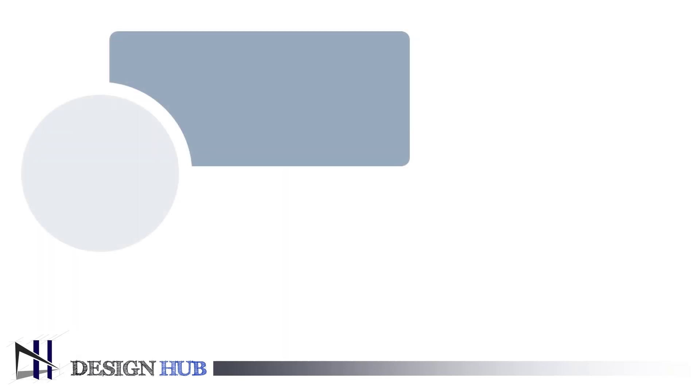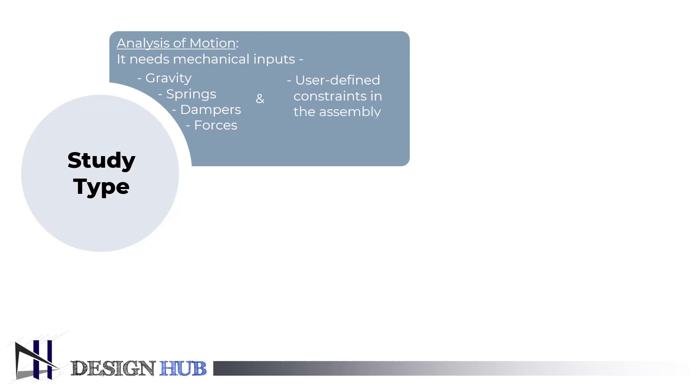Now, let's learn about the third study type, the analysis of motion, also known as kinematic analysis. It utilizes mechanical inputs like gravity, springs, dampers, forces, etc., and the user-defined constraints or mates and assemblies to precisely recreate the mechanical movement of the assembly and give designers reaction forces, position, acceleration, and velocities.